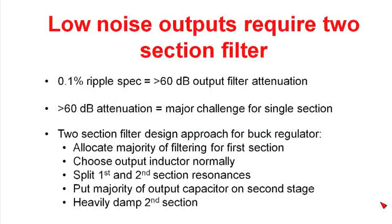So in low-noise requirements, many times you'll see ripple specifications down in the 0.1%. And so when you translate that to decibels, you'll see that you need a ripple attenuation of greater than 60 dB.